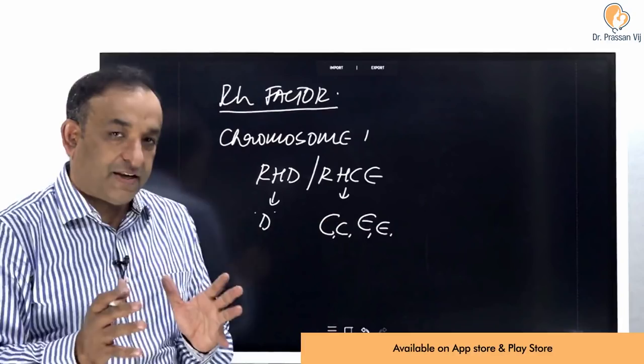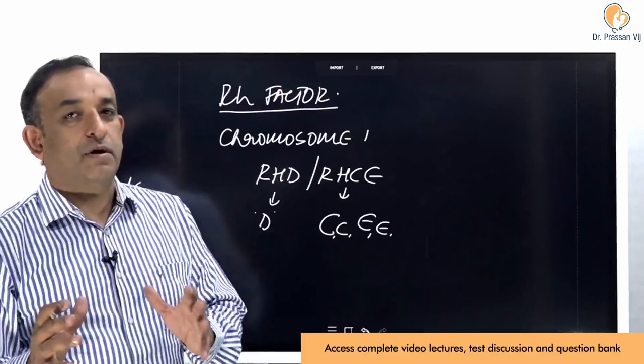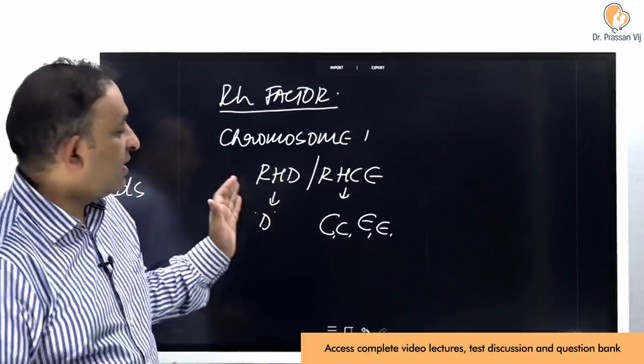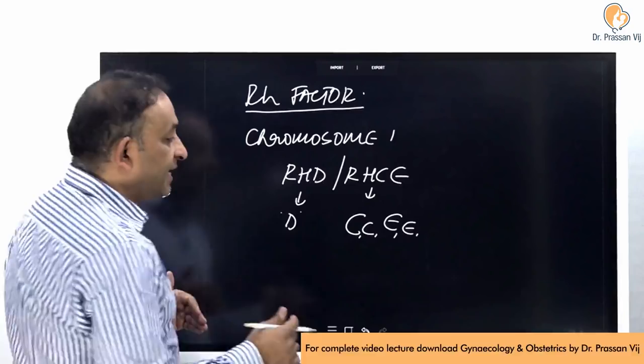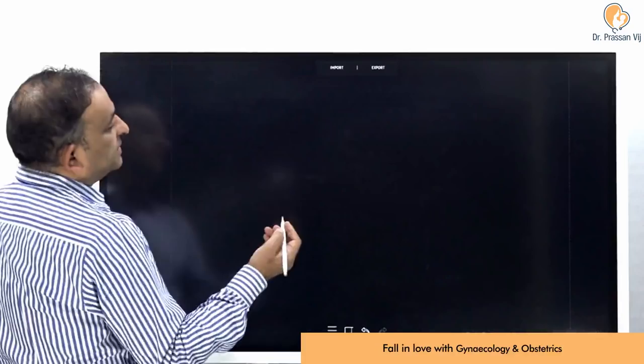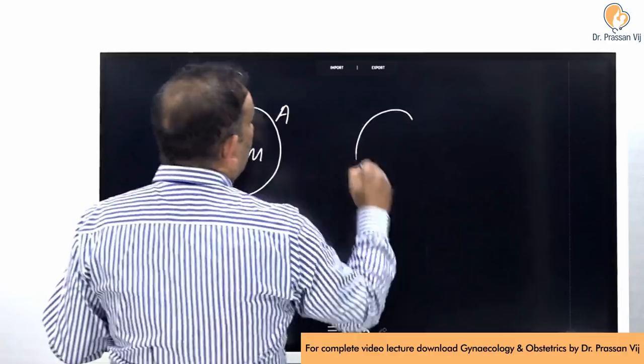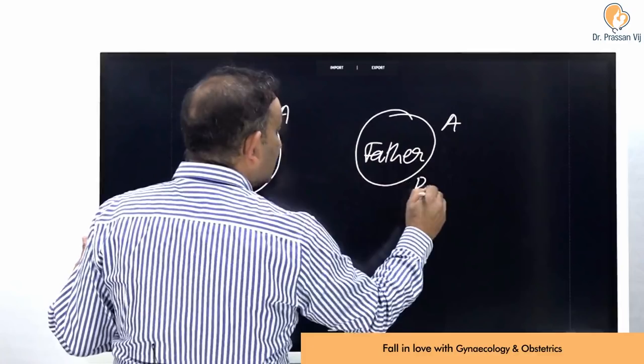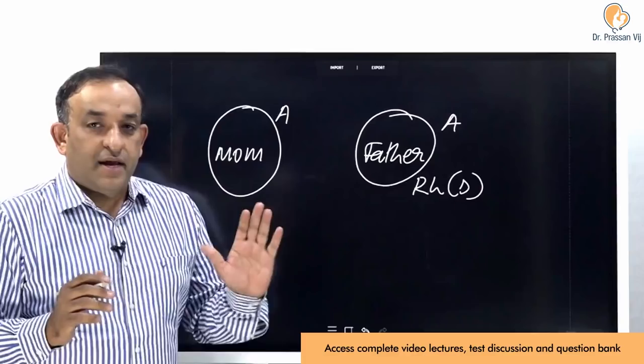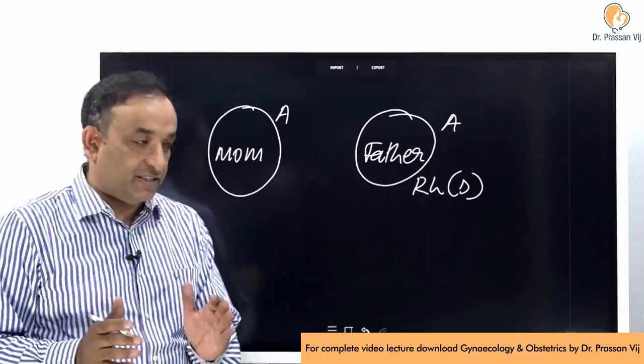The main antigen responsible for the majority of problems in RH alloimmunization is the D antigen, associated with the RHD locus on chromosome 1. If this D antigen is present on a person's RBCs, we say that person is RH positive; if it is not present, we say the person is RH negative. For example, the mother's RBC has the A antigen but no D antigen, while the father has the A antigen and also the RH or D antigen — so we say the father is A positive.